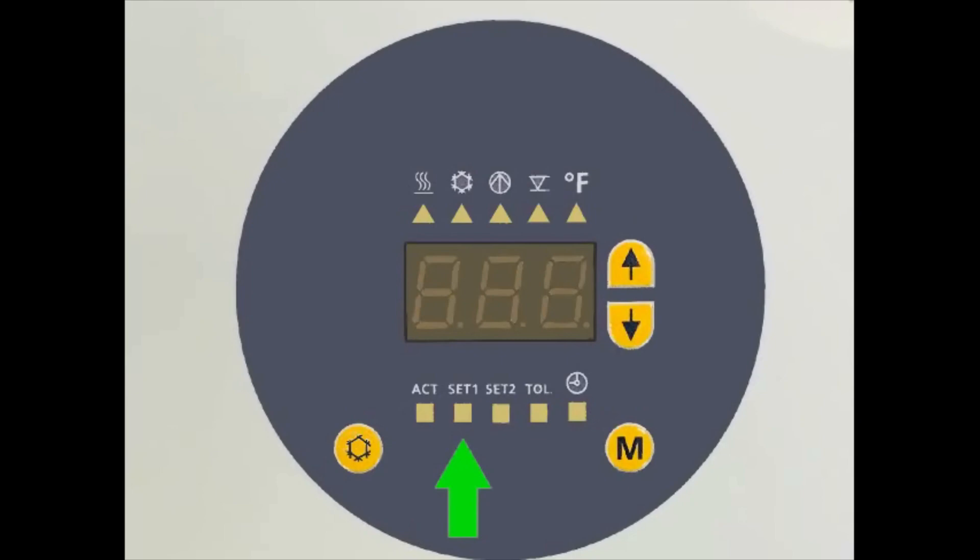Next we have the set one LED indicator. Set one will be illuminated during standard operation. After hitting the mode key to show the set one temperature set point, the set point can then be adjusted by using the up and down arrows.